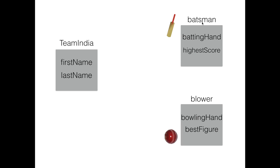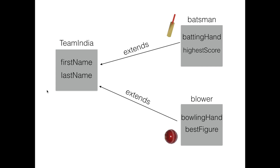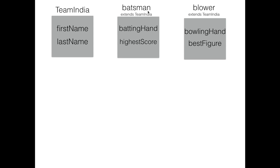All my batsmen will have a first name and a last name as well. So instead of writing first name and last name again, I'm going to simply extend the Batsman class to Team India because it already has those properties. So my Batsman class will have batting hand and high score along with first name and last name. Similarly, I'll extend my Bowler class because all my bowlers will have a first name and last name as well. Table Per Class Hierarchy in Hibernate means that all the properties of a superclass and all the properties of subclasses need to be represented in a single table.